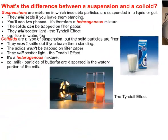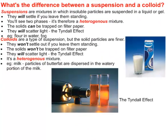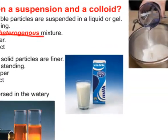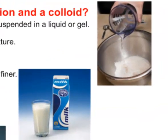What's the difference between a suspension and a colloid? Suspensions are mixtures in which insoluble particles are suspended in a liquid or gel. They will settle out if you let them stand long enough. You will see eventually two phases, so therefore it really is a heterogeneous mixture. They can be trapped on filter paper and they will scatter light—they will demonstrate the Tyndall effect. Good examples: if you put flour into water you get a suspension; the flour will settle to the bottom eventually. Fog is a pretty good example of a suspension.